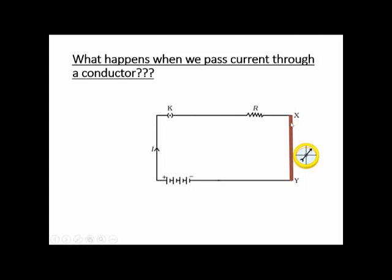Let's say this is north and this is south. If current flows through this conductor, and you bring a compass near it, the compass needle will start flicking. You can write down the mnemonic SNOW — S-N-O-W. When the current flows from south to north, the needle of the compass will flick or move towards west.